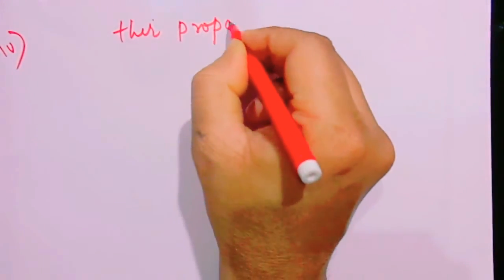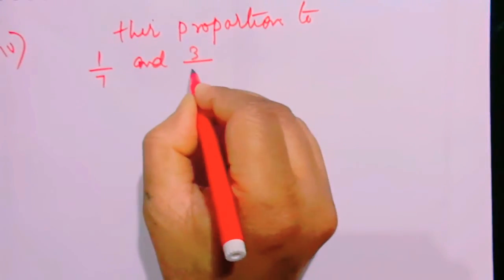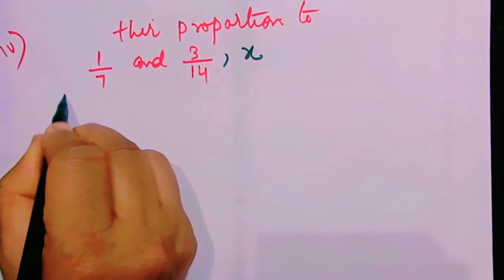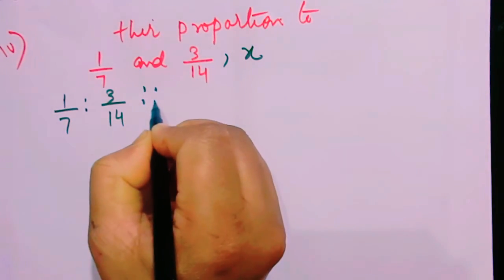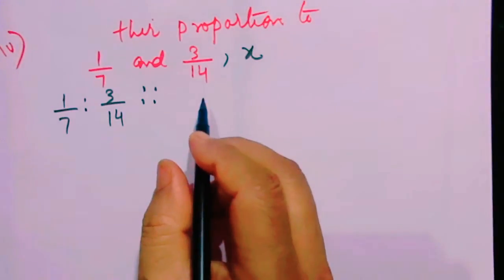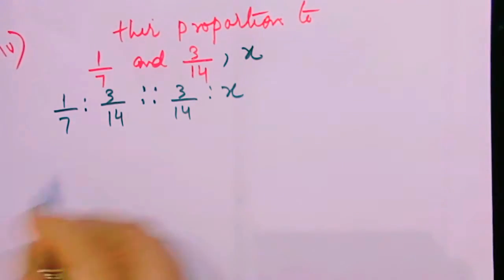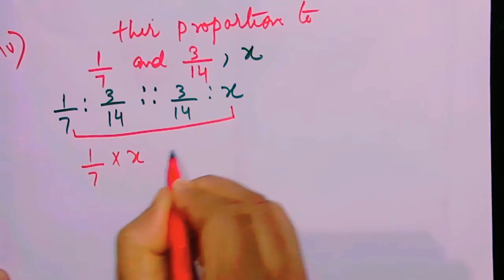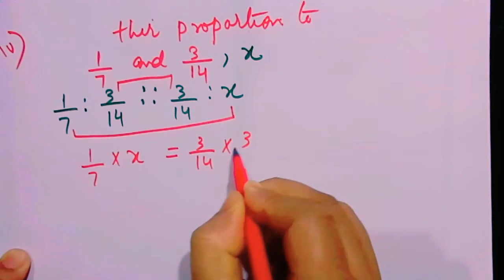In number 4, they are asking you the third proportion of 1 by 7 and 3 by 14. The question concept is the same, but they are giving you fraction numbers so that you get a little confused. You have already mastered the formula: the ratio of first and second is in proportion to the second and the third. Applying product of extremes: 1 by 7 into x is equal to the product of the means, 3 by 14 into 3 by 14.